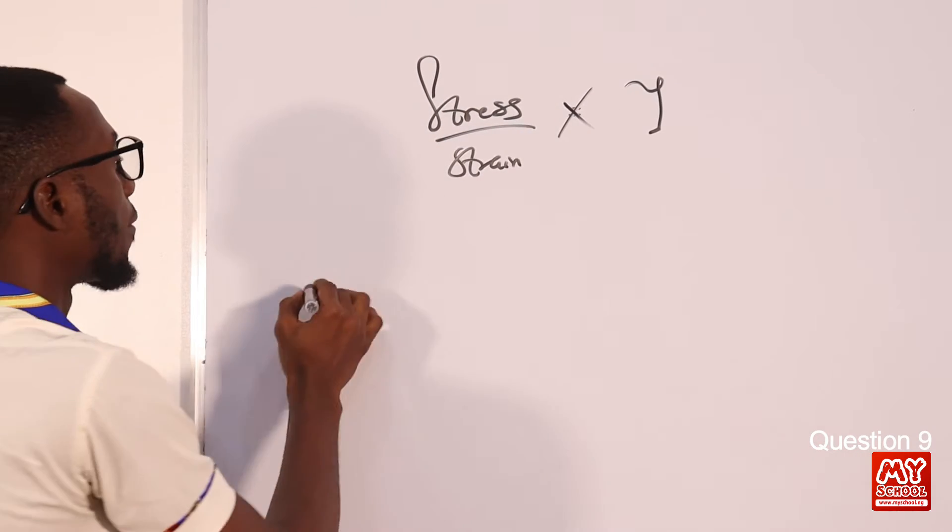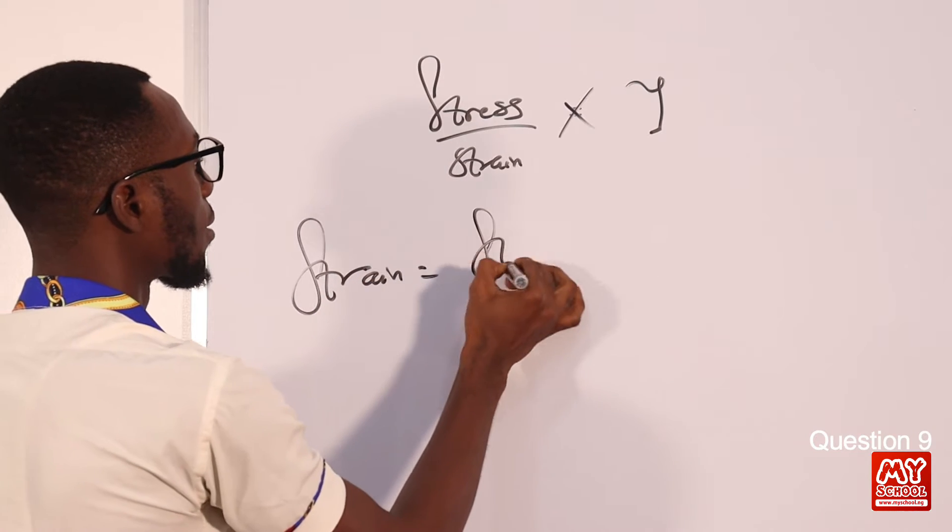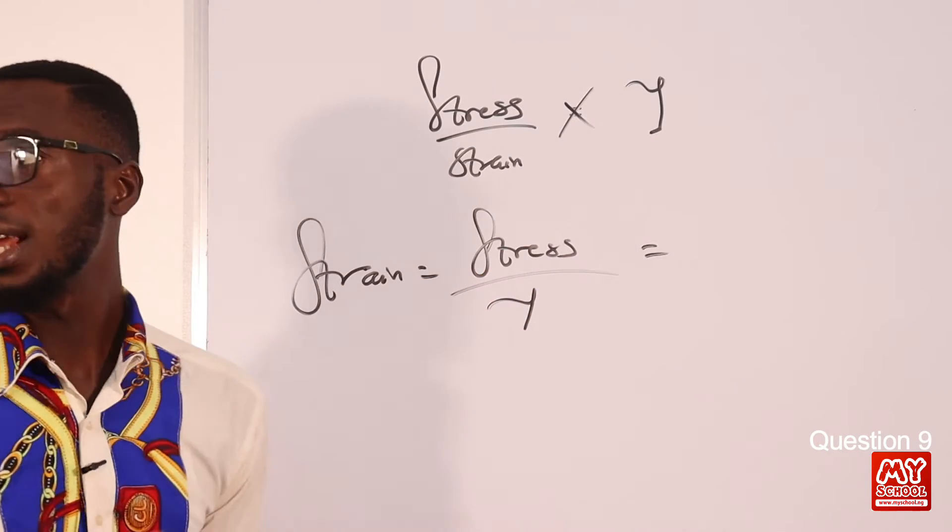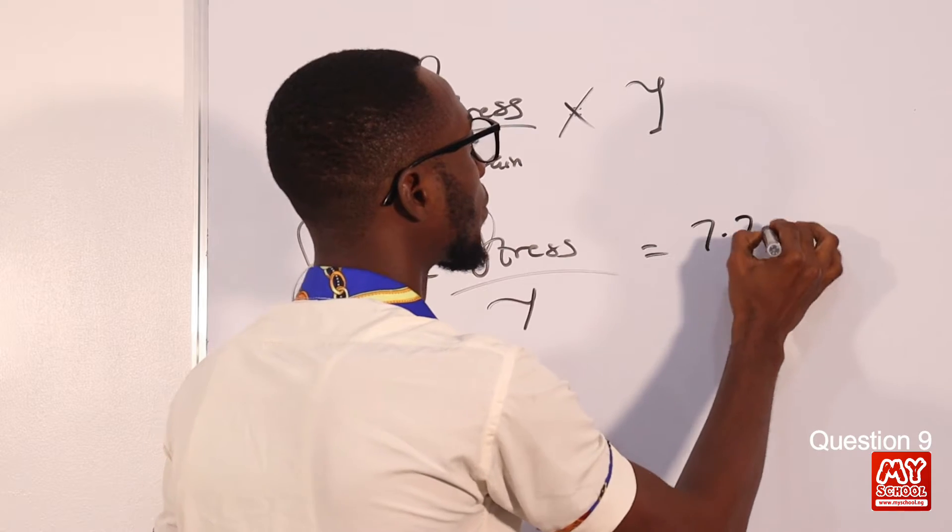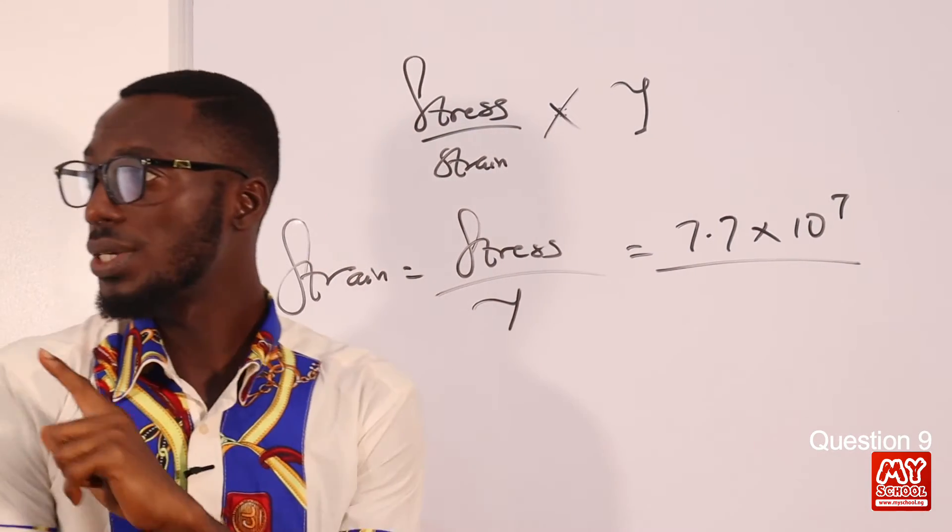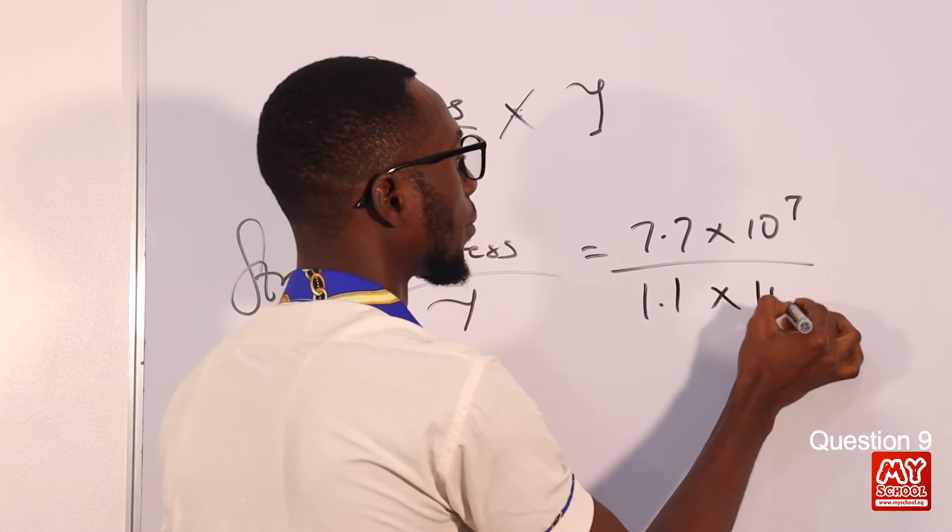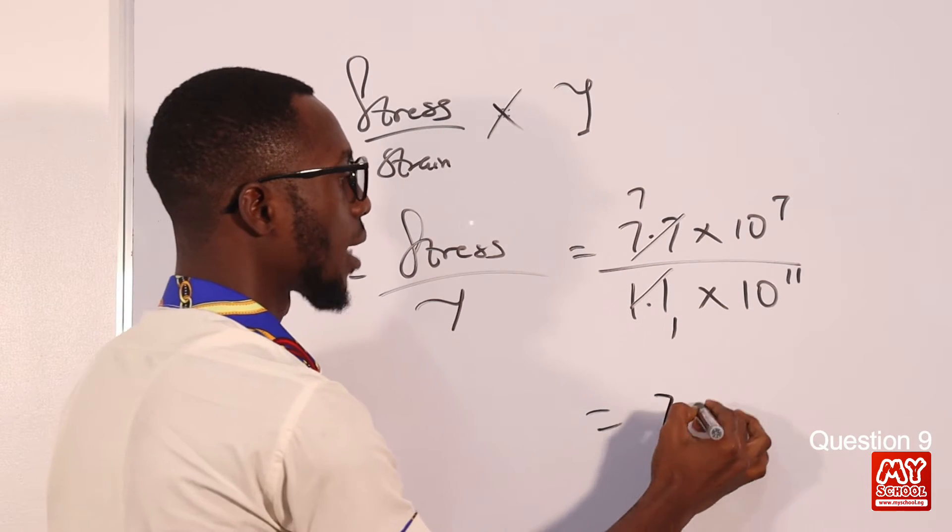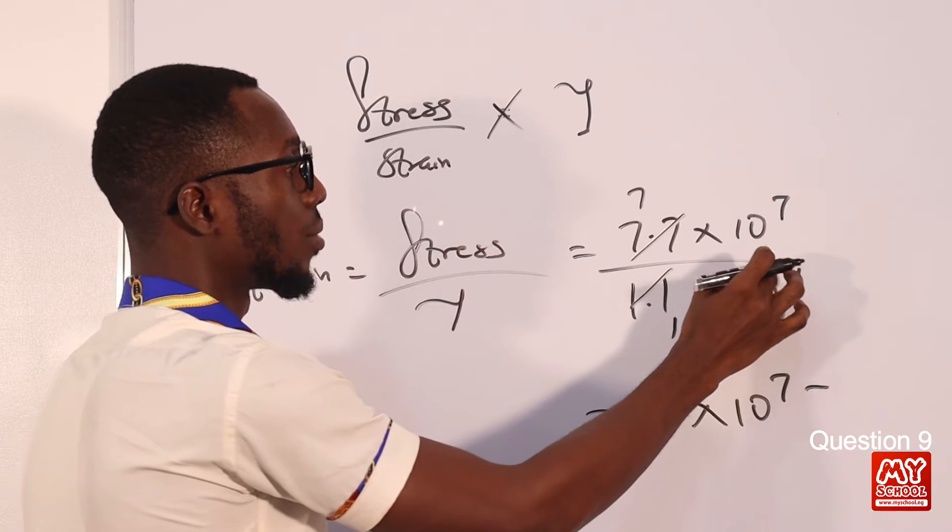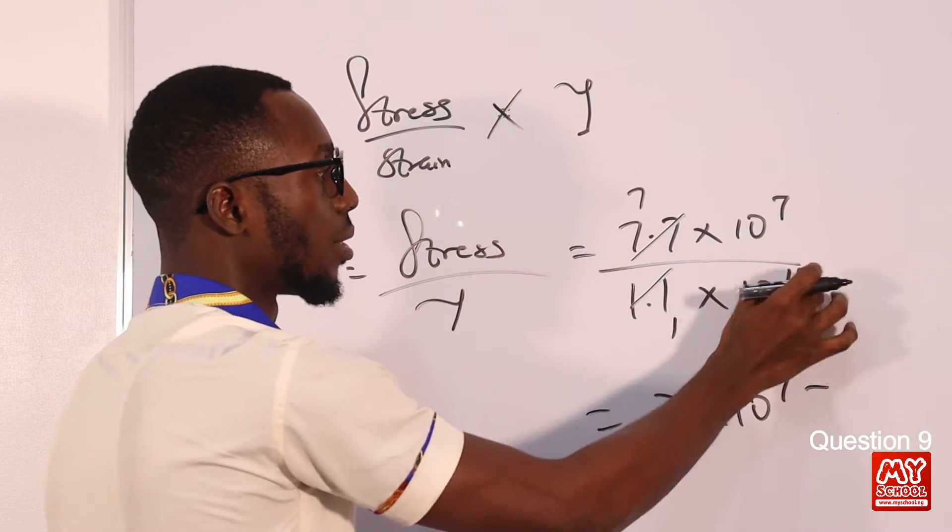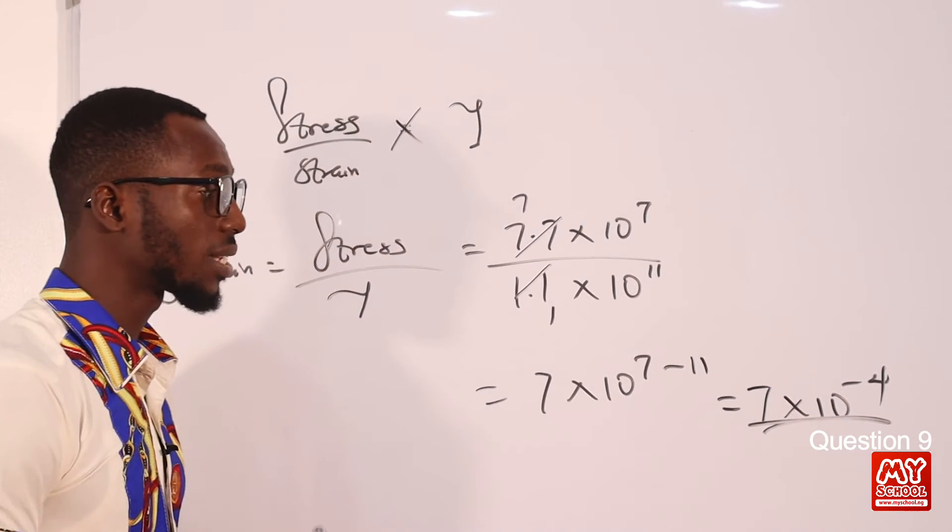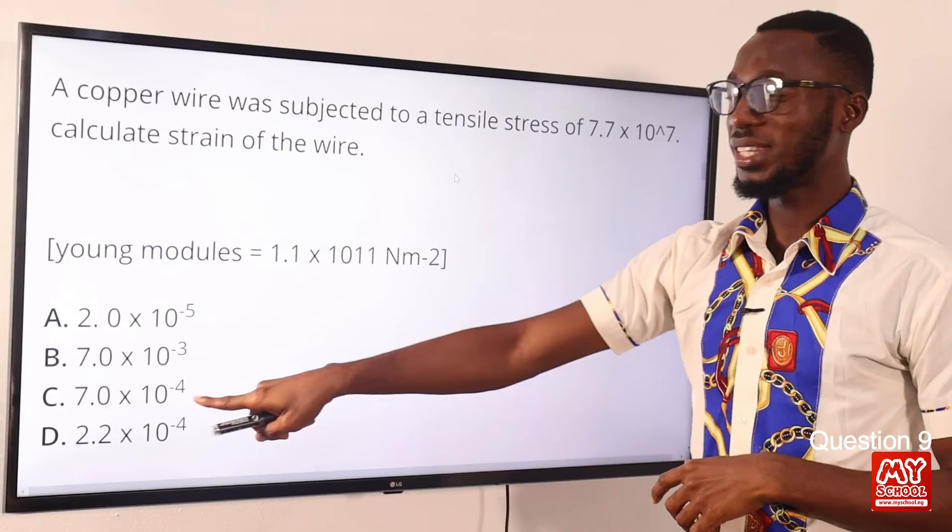Then we are going to have strain as stress, remember stress is force over area, over the Young modulus. So we have the stress is giving us 7.7 times 10⁷ divided by the Young modulus which is giving us 1.1 times 10¹¹. This gives you 7 times 10⁷. The same base, so this all over means divide and divide changes to minus. 7 minus 11, so that would be 7 times 10⁻⁴. This is what we should have, 7 times 10⁻⁴. Let's see if we can sort this out from the options provided. Of course that can be found in option C. So option C is the correct option.